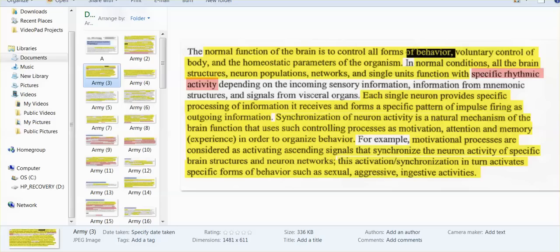It receives and forms a specific pattern of impulse firing as outgoing information. Synchronization of neuron activity is a natural mechanism of the brain function that uses such controlling processes as motivation, attention, and memory in order to organize behavior. So I've heard from an awful lot of you who either leave comments or tell me that you're having great difficulty getting motivated to do anything. Well, motivational processes are considered as activating ascending signals that synchronize the neuron activity of specific brain structures and neuron networks. This activation, synchronization, in turn, activates specific forms of behavior such as sexual, aggressive, ingestive activities.